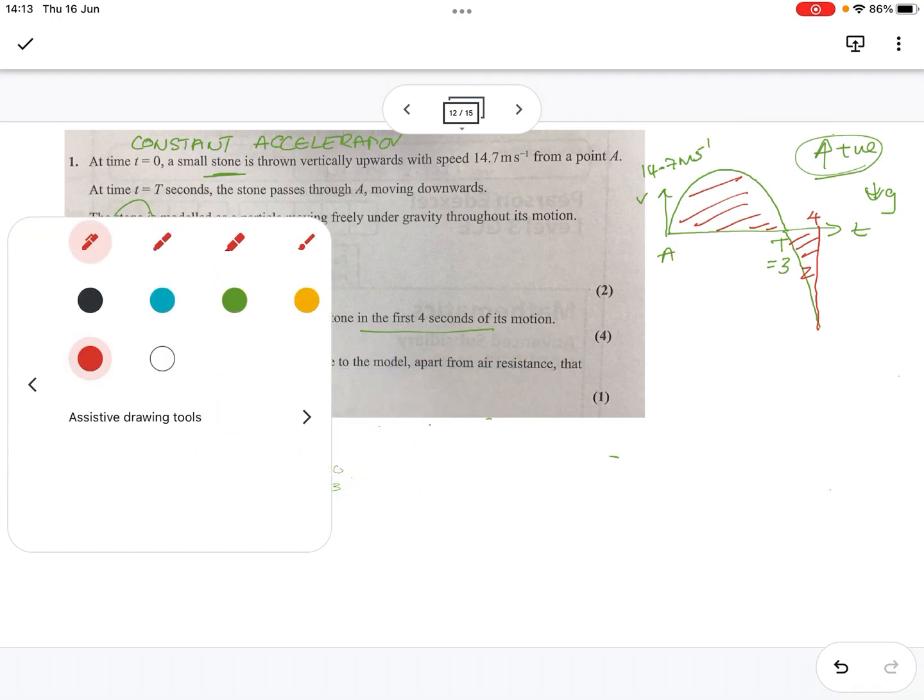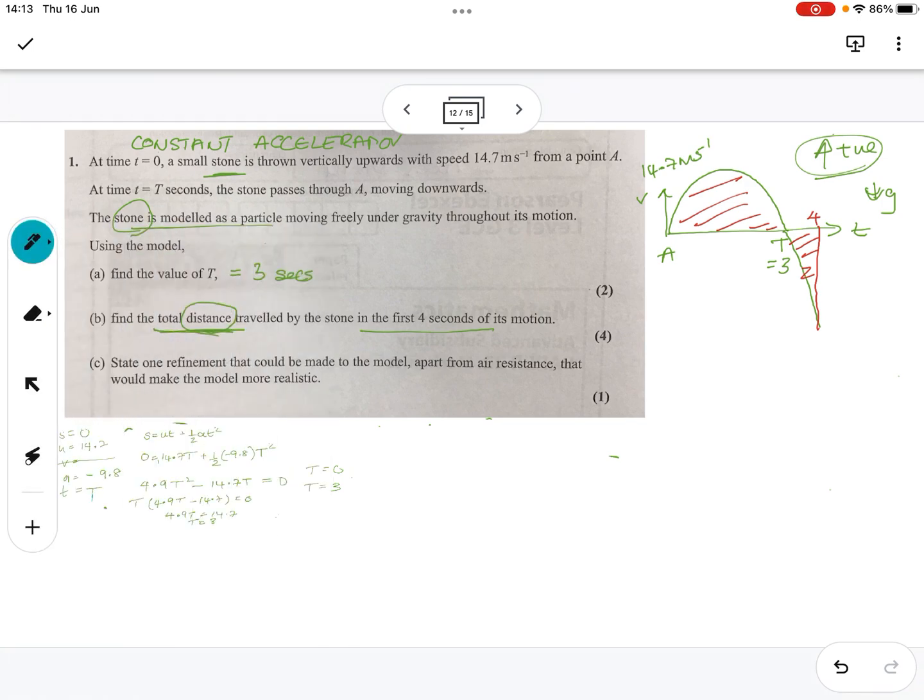So, part B. First four seconds. So, I'm going to put T as 4. So, I've got SUVAT again. Because that's all I've got. T is 4, still working under negative gravity. We've still got 14.7. And I actually want to know the distance or the displacement this time. So, it's the same equation. S equals U, T plus a half A, T squared.